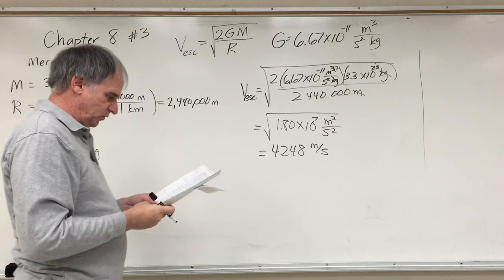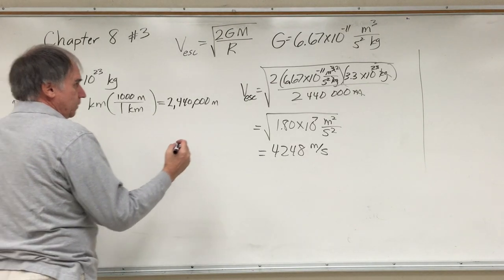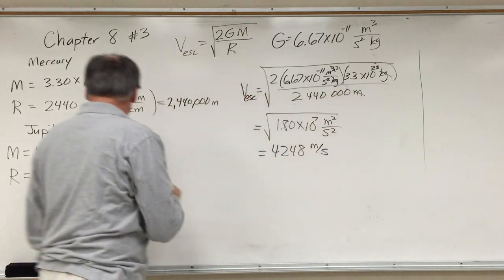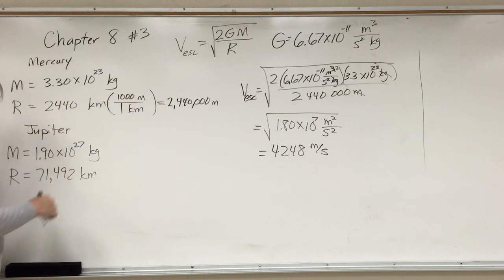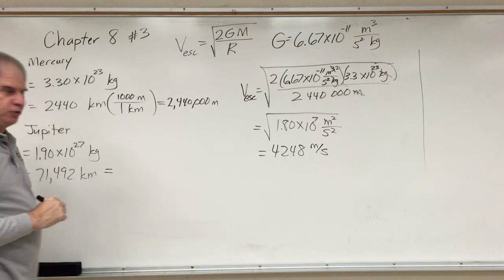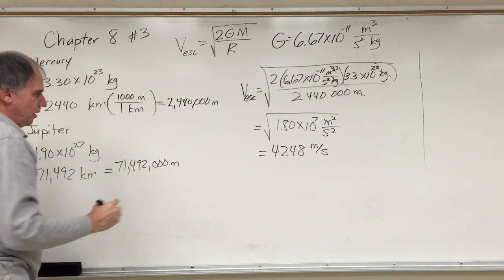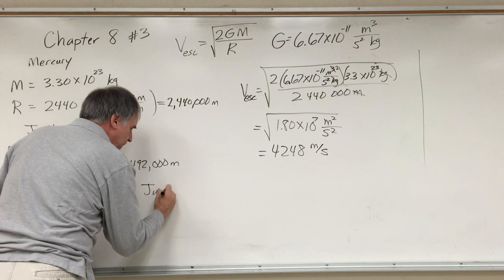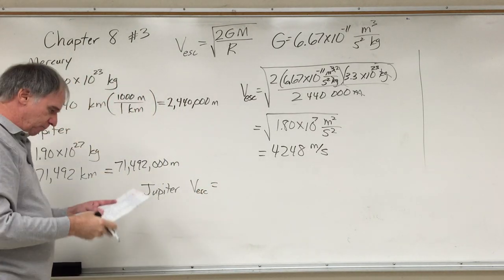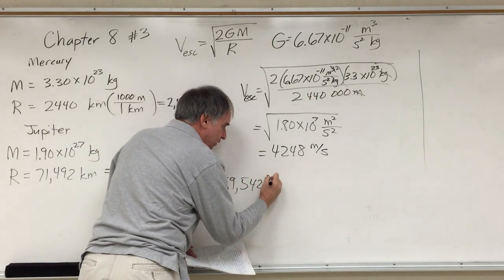The procedure is basically identical for working out the escape velocity of Jupiter. The mass instead of 3.3 times 10 to the 23 will be 1.90 times 10 to the 27. The radius that we use will be this one converted into meters, that'll be 71,492,000 meters. For Jupiter, we'll leave it as an exercise at home to plug in the numbers and double check. 59,542 meters per second is what I got.